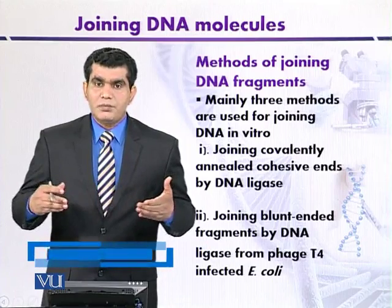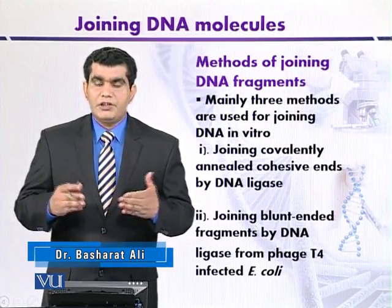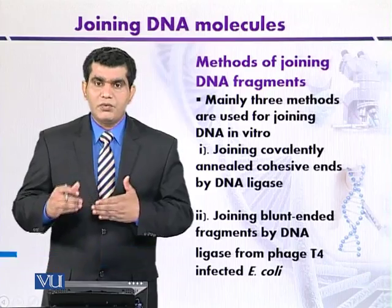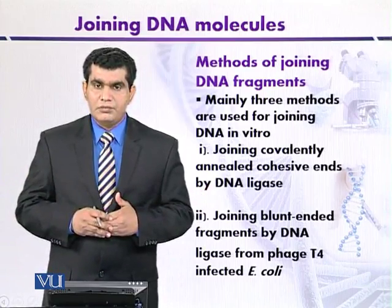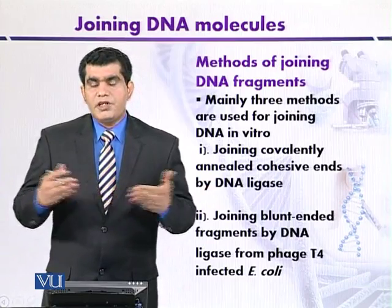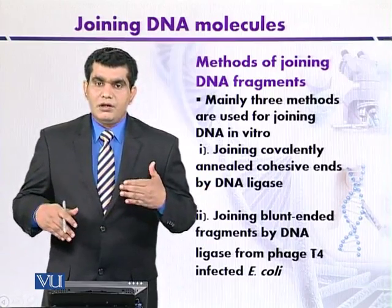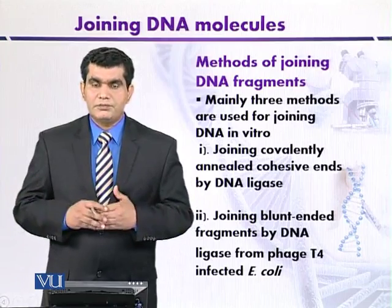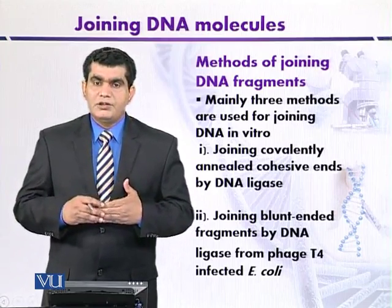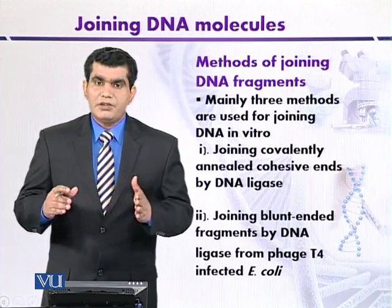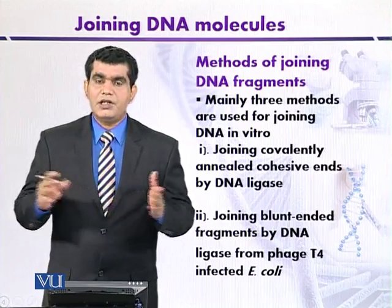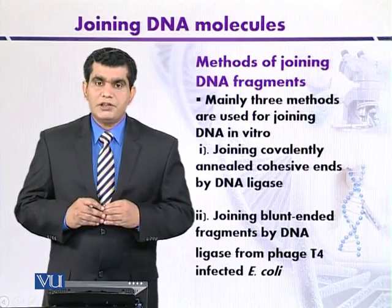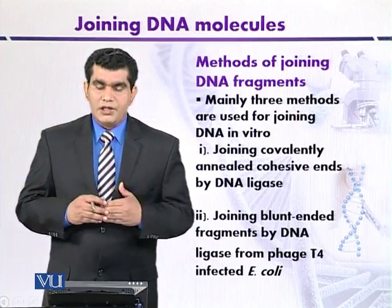Another method also depends on DNA ligase, but from a different source. This DNA ligase is encoded by Phage T4, which can infect E. coli. T4 DNA ligase joins or ligates DNA fragments that have blunt ends. For instance, if the target DNA is digested with a restriction enzyme that produces blunt ends, ligation of those blunt ends is mediated by T4 DNA ligase.